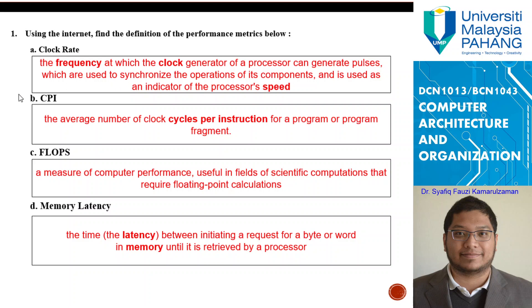Next question is CPI. What is CPI? CPI is a short form for cycles per instruction. The definition will be the average number of clock cycle per instruction for a program or a program fragment. Actually, when you run a program, the program runs according to your clock tick-tocks.